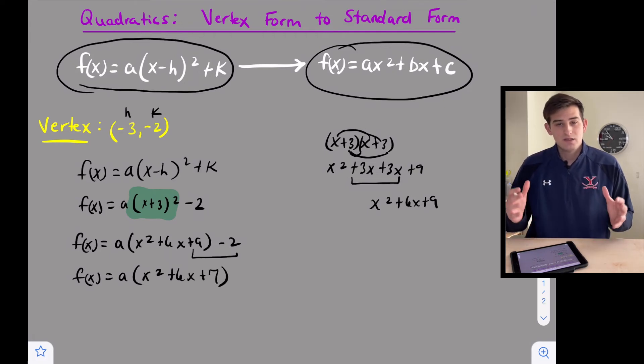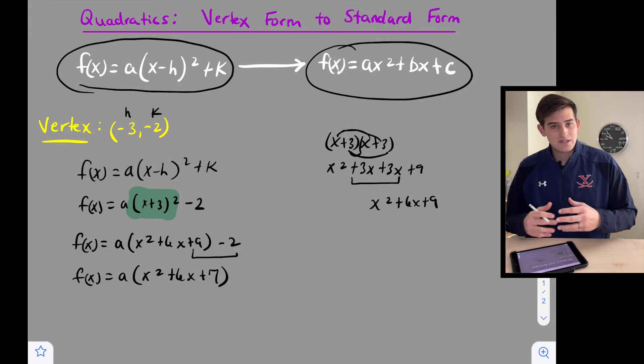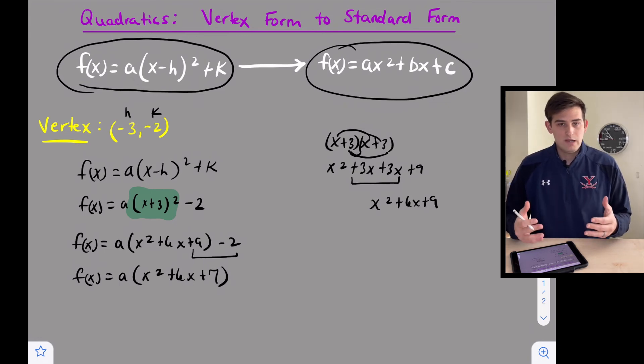Now with a, a can really be anything we want it to be. We can plug anything we want in for a because we're just going to multiply it and that's just like vertically stretching or shrinking this parabola. But the vertex itself is not going to change. It's still going to be at (-3, -2).